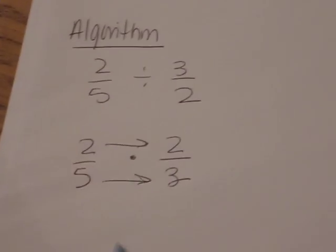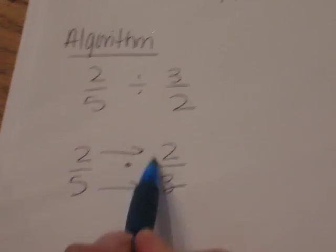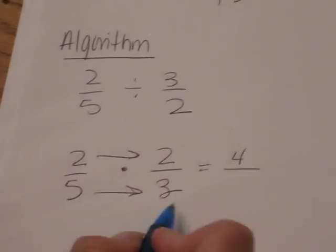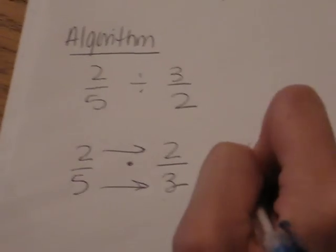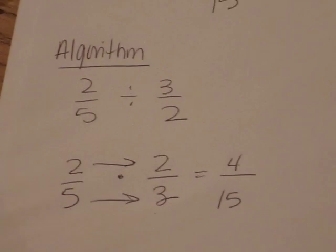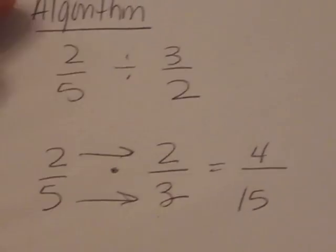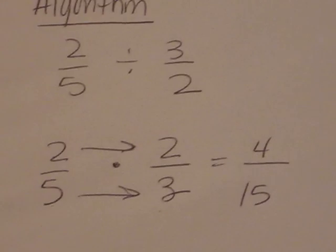So the algorithm for multiplication, you go straight, numerator to numerator, and you get four, and then denominator to denominator, and you get fifteen. So our model has just reinforced that standard algorithm of invert and multiply.